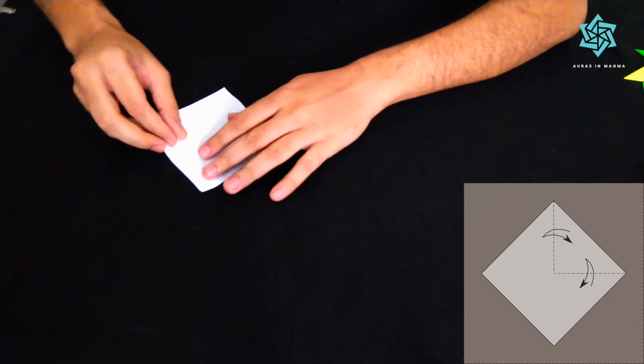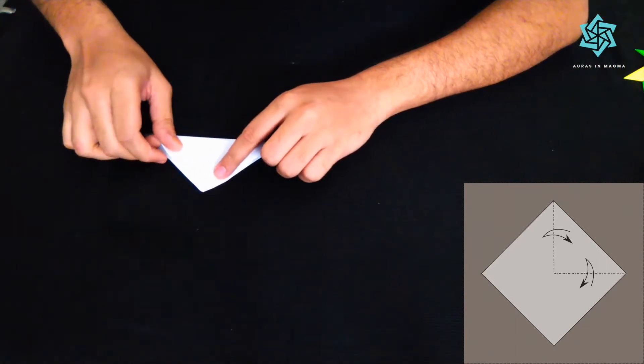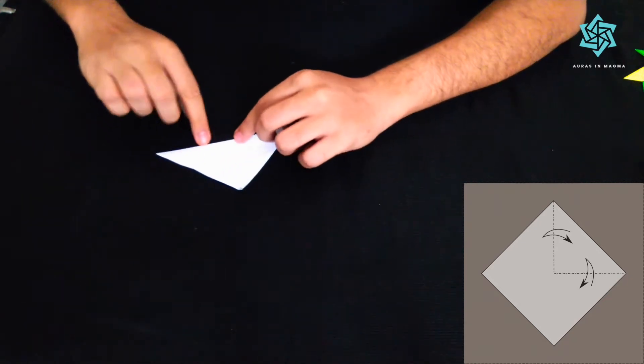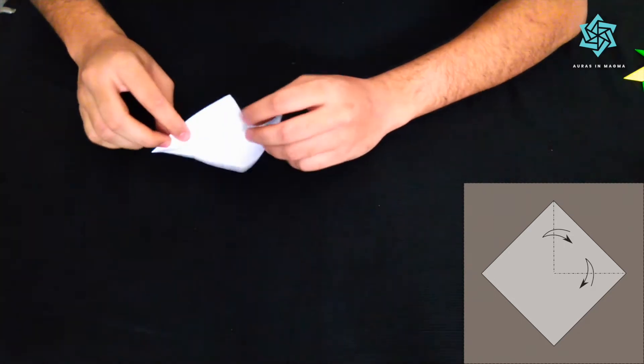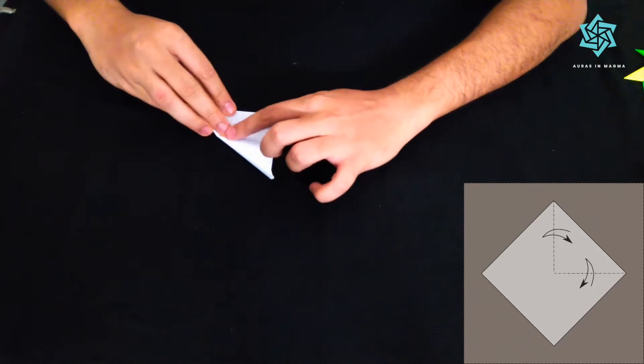So we start with a square sheet of paper and we firstly fold it along the diagonals. So I am not going to make the whole fold. I am just going to fold it from somewhere around the center line to this end. Similarly, I will do it with another crease like this.